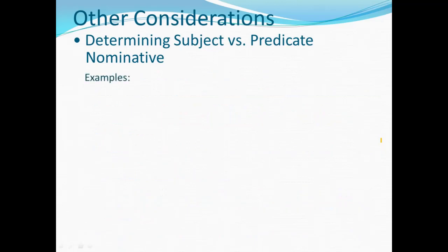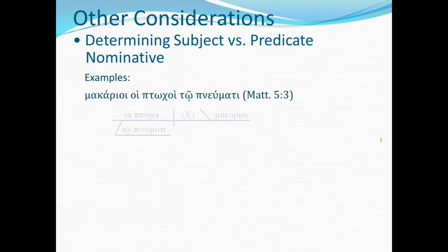Let's take some examples. We've already looked at Blessed are the poor in spirit. You have hoi ptokoi — articular — and makarioi — anarthrous. This is the predicate position of the adjective, and therefore makarioi is predicate adjective, leaving the articular expression hoi ptokoi to be the subject. Notice the elliptical verb in the diagram.